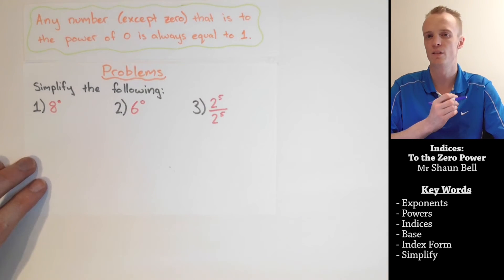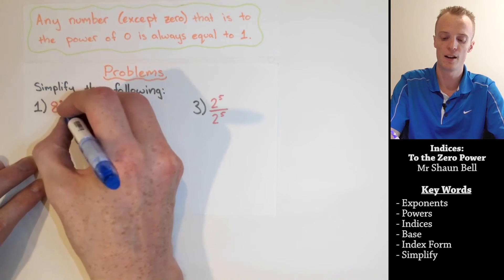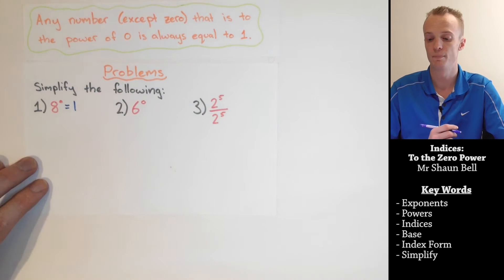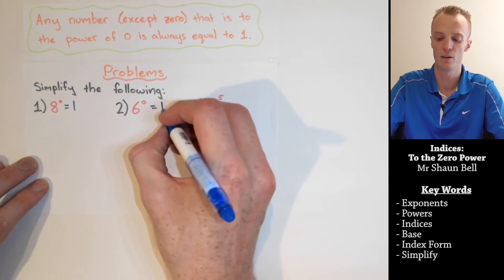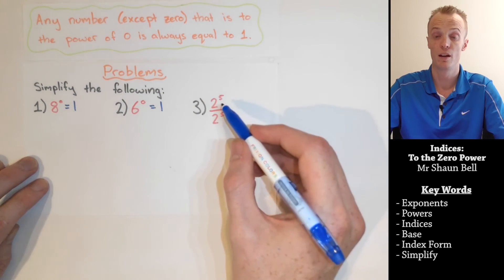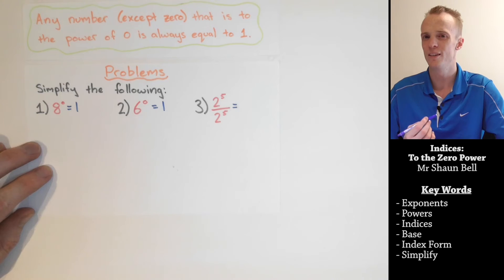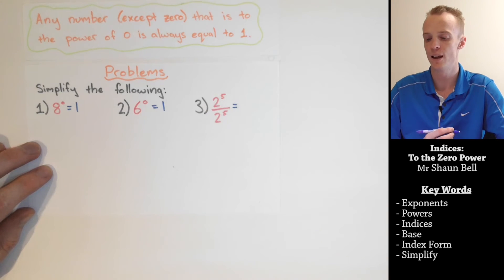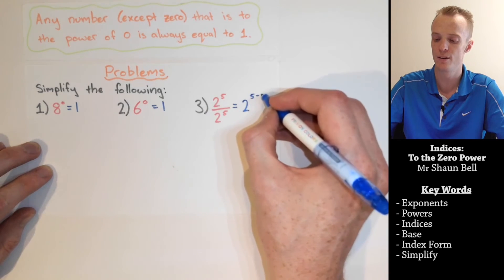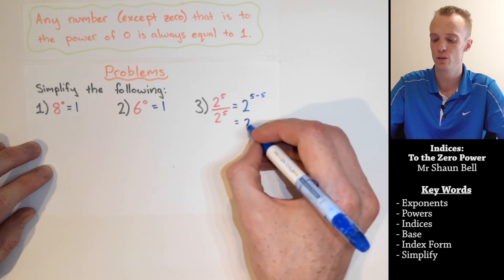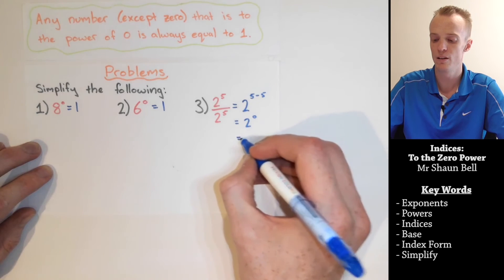What if I have eight to the zeroth power? Anything to the power of zero is always equal to one, so eight to the zero power equals one. Six to the zero power — the power is zero — so that will also equal one. For the third problem, we're dividing the top number by itself, so it equals one. To show this formally: we're dividing two indices with the same base, so we keep the base of two and subtract the exponents, giving us two to the zeroth power, which equals one.